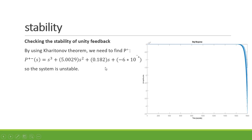We can check the stability of the unity feedback characteristic equation. This equation is obtained by G over one plus GH. The characteristic equation is 1 + GH. This is the characteristic equation for Kharitonov. The Kharitonov polynomials include plus-negative and plus-plus forms, because the degree of the uncertain system is three.